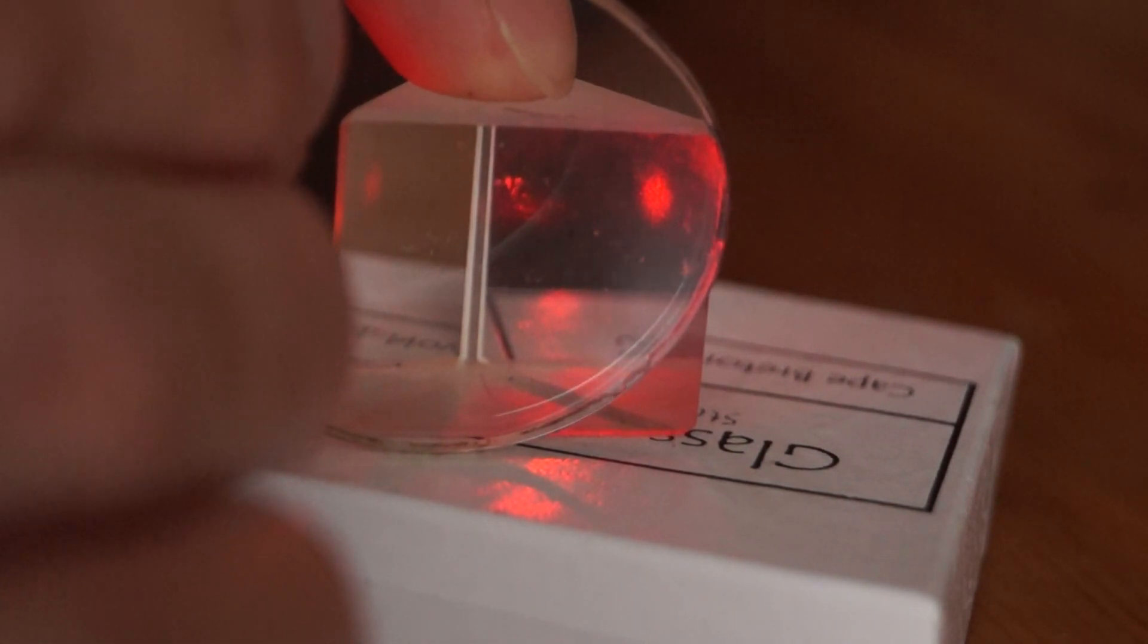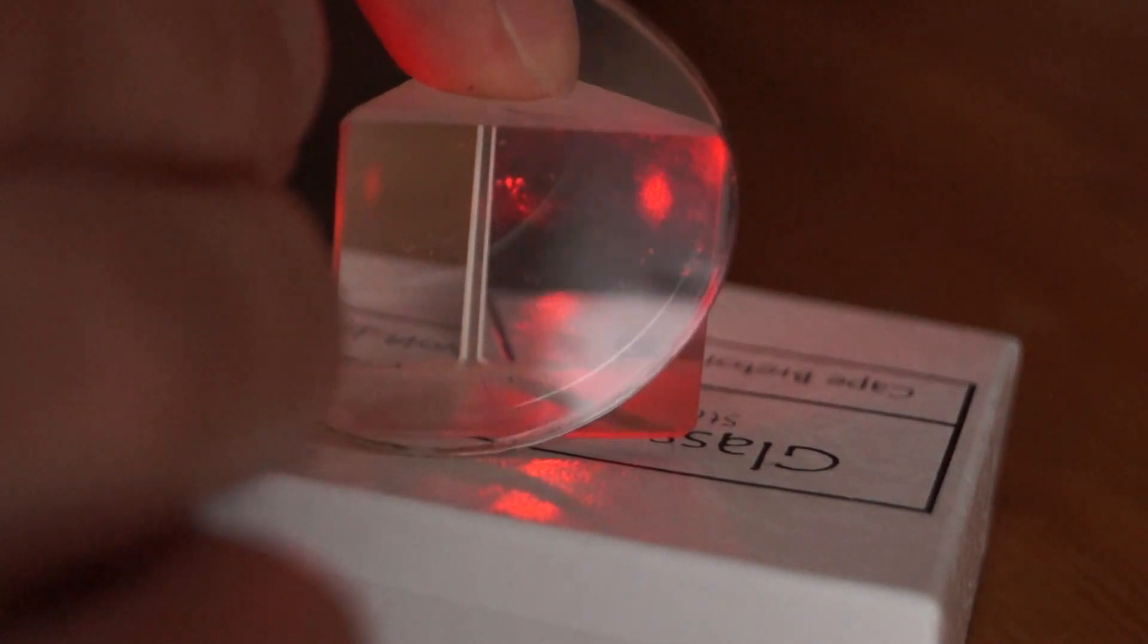Once the evanescent waves enter the curved lens, it converts back to visible light and can be observed as a red spot.